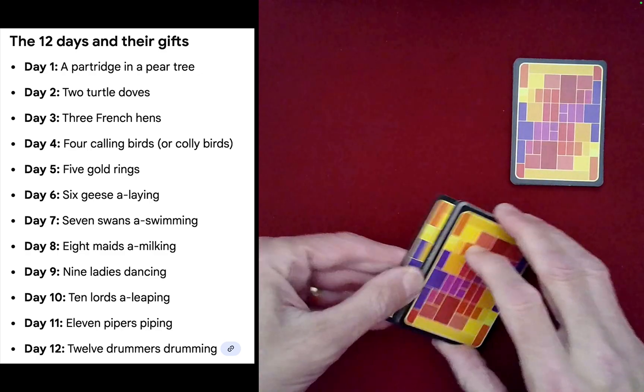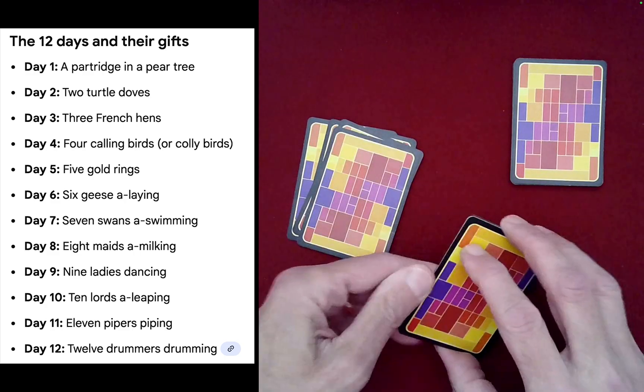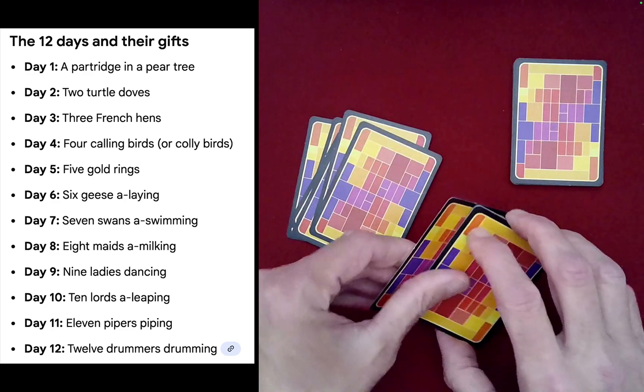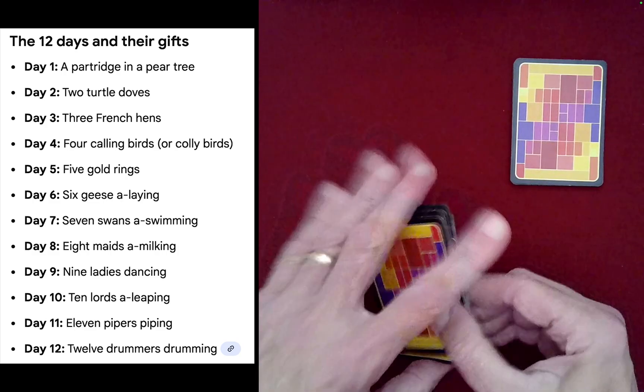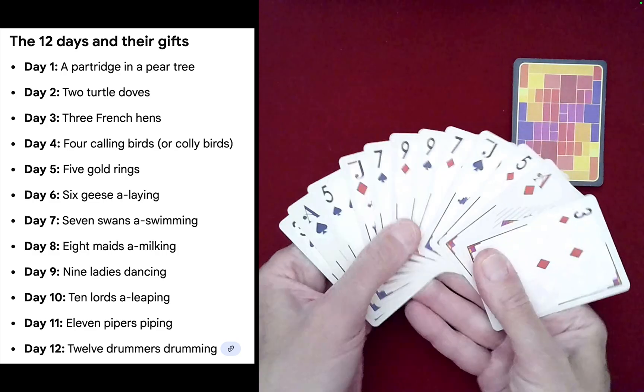That's not super mixed. We have all these spades and diamonds here. So what we're going to do to begin to really mix these, and you're going to mix them to your heart's content in just a moment, but here I'm performing what's called a Klondike shuffle.